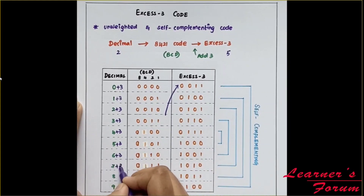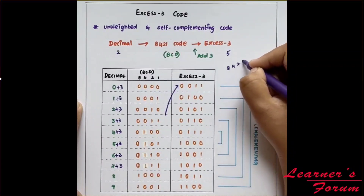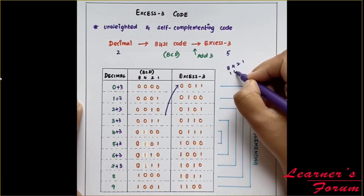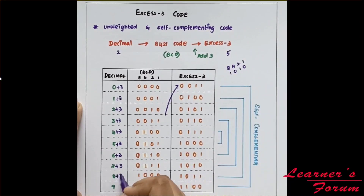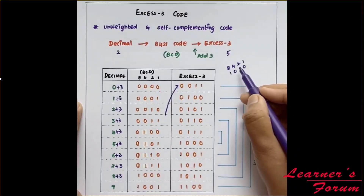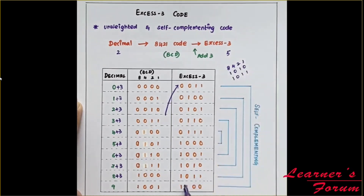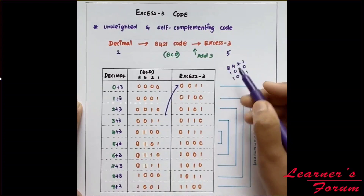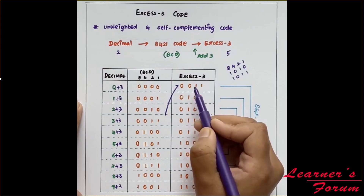For 7: 7 plus 3 is 10. Using 8421, 8 plus 2 equals 10, so the representation is 1010. For 8: 8 plus 3 is 11. Using 8 plus 2 plus 1, we get 1011. For 9: 9 plus 3 is 12. Using 8 plus 4, we get 1100.